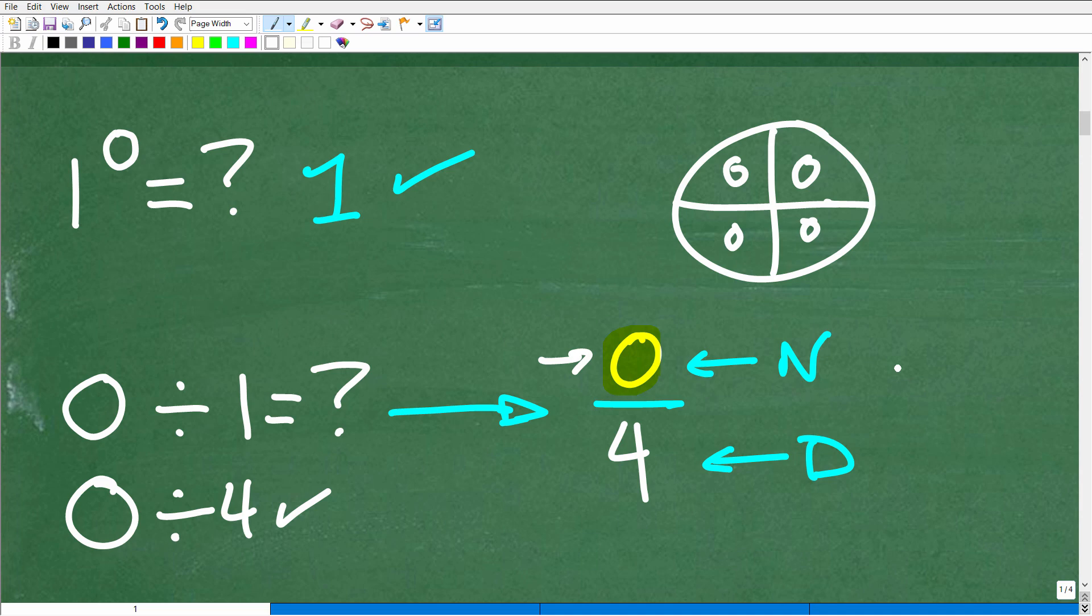But zero divided by one, zero divided by four, doesn't make a difference, is going to be zero, okay? So that kind of conceptually makes sense, especially when you think of it as a fraction.